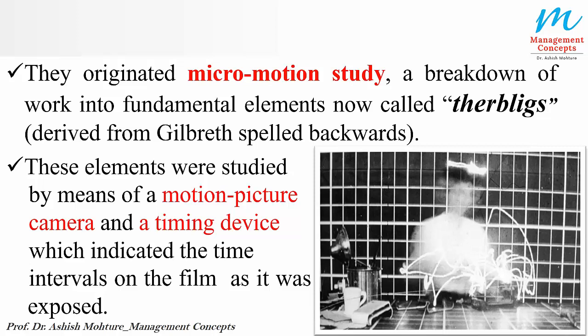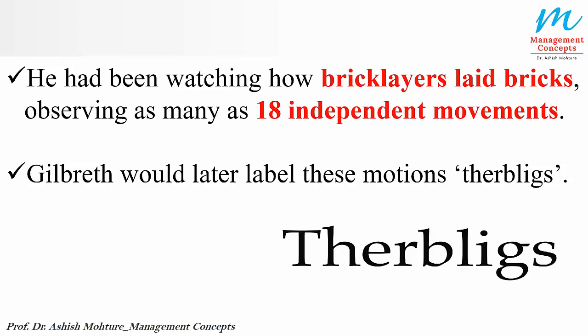Gilbreth had been watching how brick layers laid bricks, observing as many as 18 independent movements. He later labeled these motions 'therbligs'. The 18 independent movements refer to the hand movements, body movements, and all body part movements a person makes while working — he identified and divided them into 18 different types, collectively called therbligs.